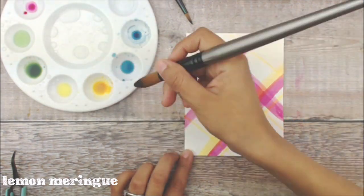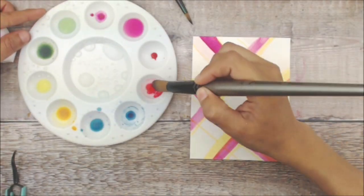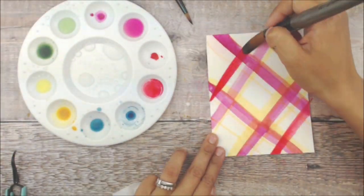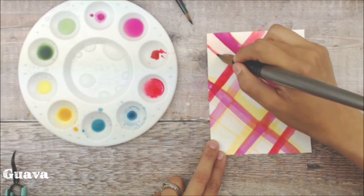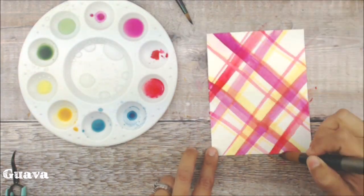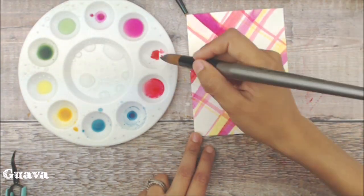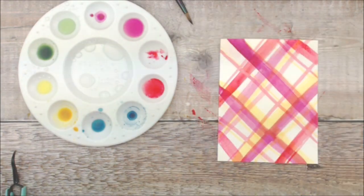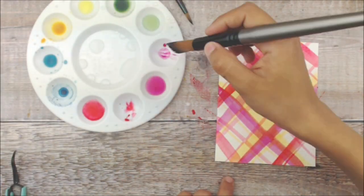Turned my palette around so I can grab some of that lemon meringue. I like to make my brush a bit pointy by drying it up on a paper towel and really shaping the head of the brush. I'm going to continue adding some of the stripes with guava and with lollipop.